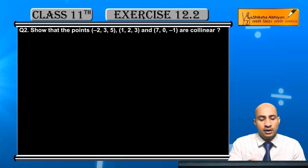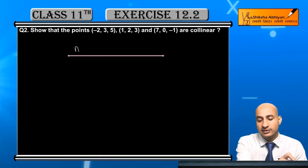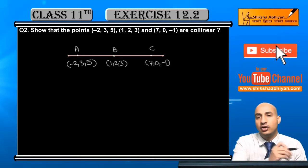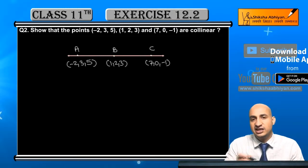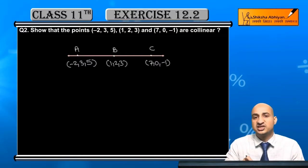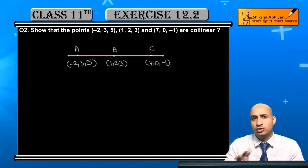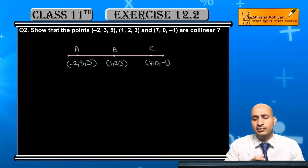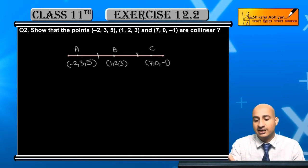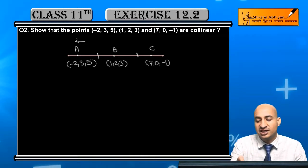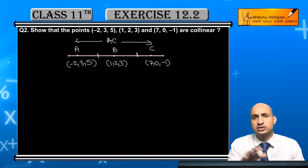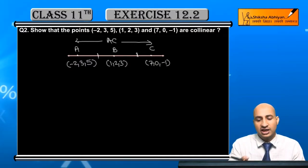अगर मैं इसे represent करूँ — एक line होगी और उस line पर points के नाम a, b और c होंगे। मान लेते हैं b, a और c के बीच में mid में है। तो smaller distances होंगे AB और BC, और longest distance होगा AC। अगर collinear हैं तो AB + BC = AC होगा। अगर collinear नहीं हैं तो smaller distances का sum, longest के बराबर नहीं होगा।